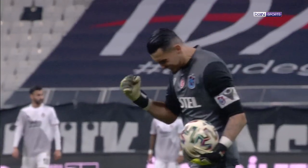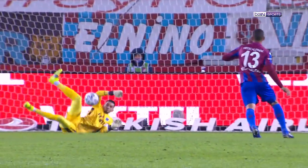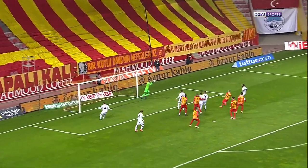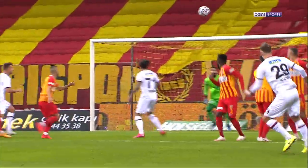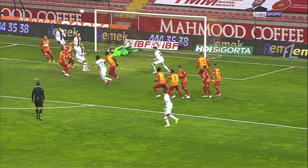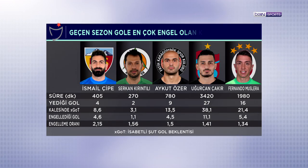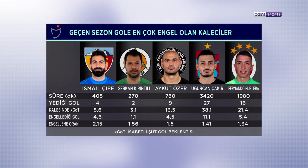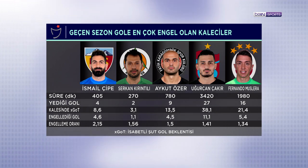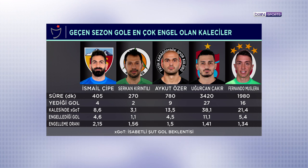Bu listeye fark değil, oran üzerinden bakmamız gerektiği de tartışılan konulardan biri. Oran üzerinden bakmanın bir sakıncası, daha az süre oynayıp toplamda daha az şutla karşılaşan ve bunlardan da az gol yiyen kalecileri öne çıkartabilmesi. Örneğin 405 dakikada kalesinde 8.6 XGOT gören İsmail Çipe, bunlardan sadece 4 gol yediği için 2.15 oranla zirvede. Onu sadece 270 dakika kaleye giren ve 3.1 isabetli şut gol beklentisinden 2 gol yiyerek 1.56'lık oran yakalayan Serkan Kırıntılı takip ediyor. En az 20 maç, yani 1800 dakika sahada kalma şartı koymuş olsak, ilk iki sırada olacak olan Uğurcan ve Museray bu listede 4. ve 5. sıradalar.